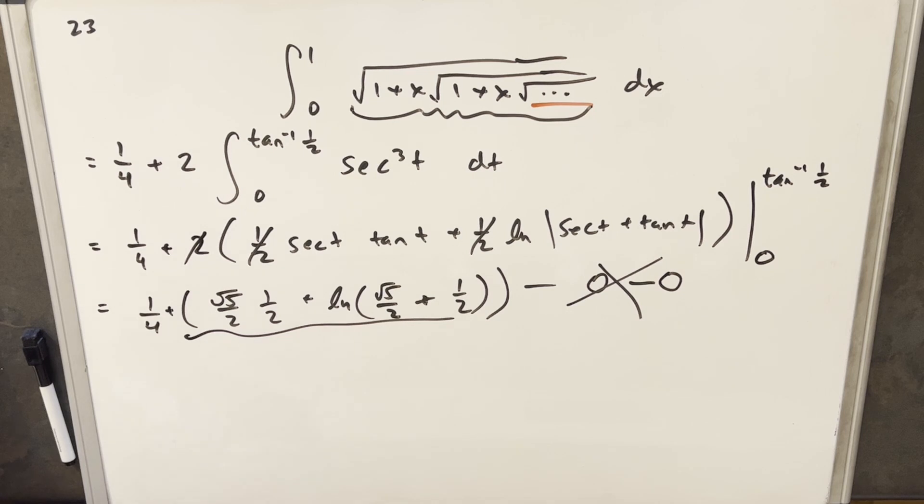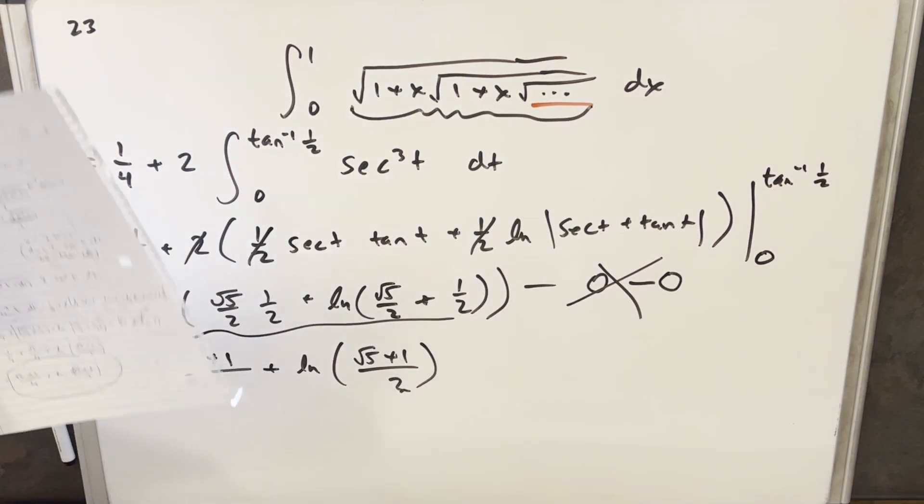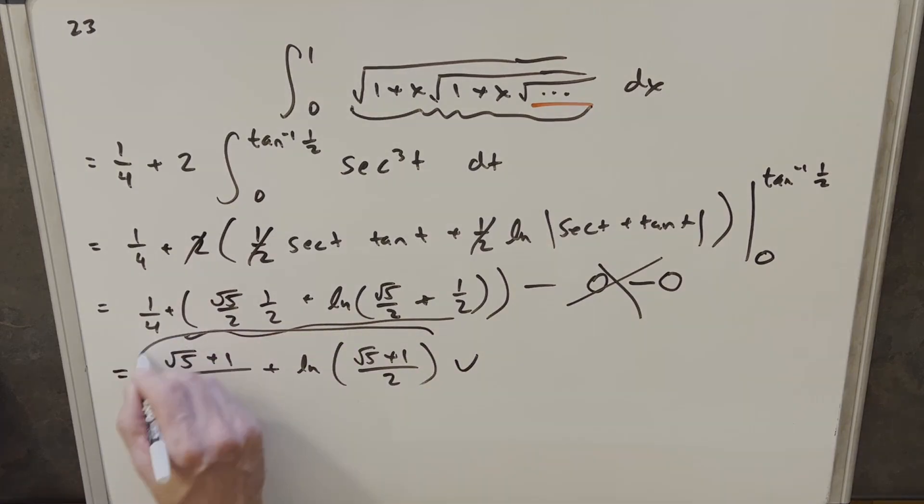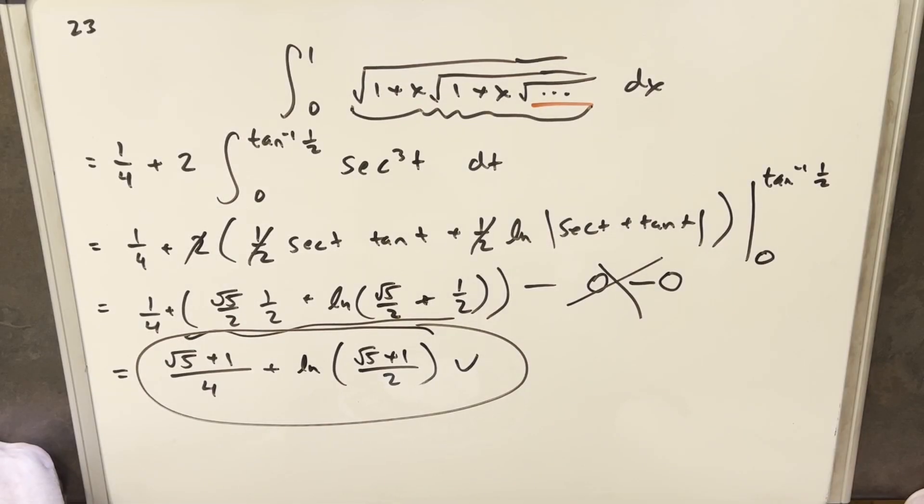Let's put this all together. We're going to have 1 fourth plus square root of 5 over 4, so I'm going to write that as square root of 5 plus 1 over 4, plus natural log. We already have our common denominator here of 2, so I can write this as square root of 5 plus 1 over 2. Let me just check my solution. That's correct. So that's it. Thanks everyone for watching, have a great day.